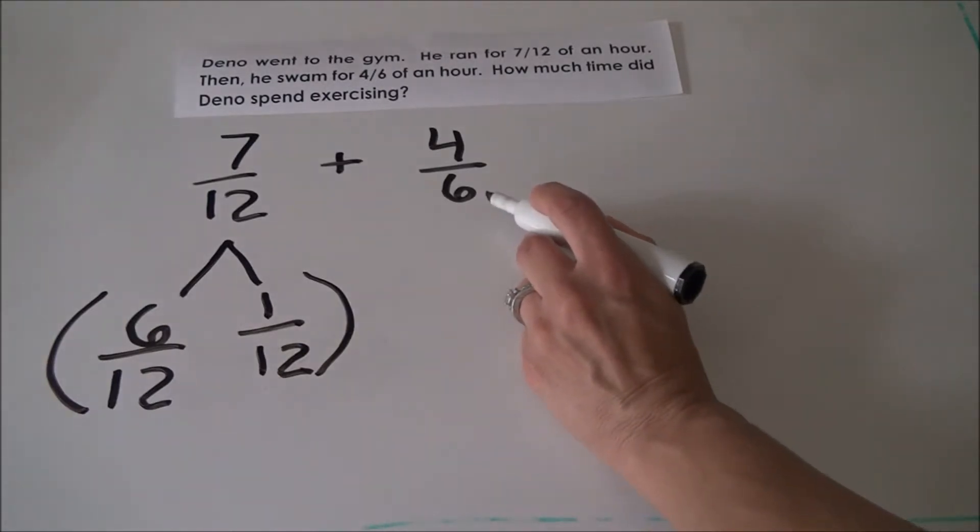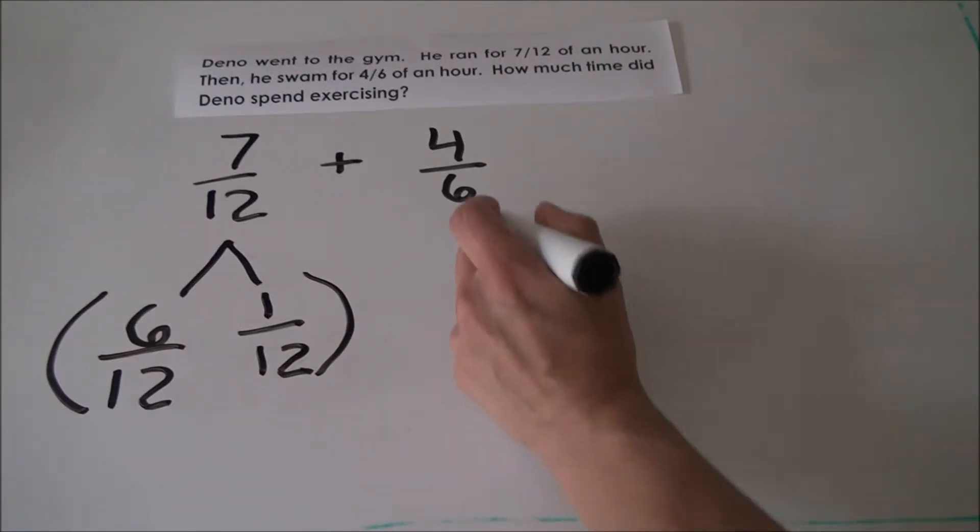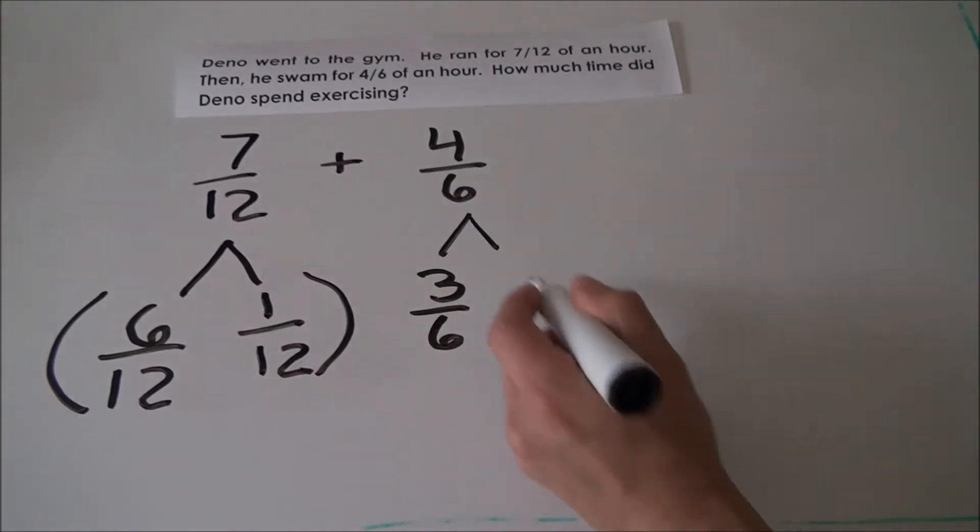We also know that 4/6 is just a little more than 1/2. We know this because it can be decomposed into 3/6, which again is equal to 1/2, plus another sixth.